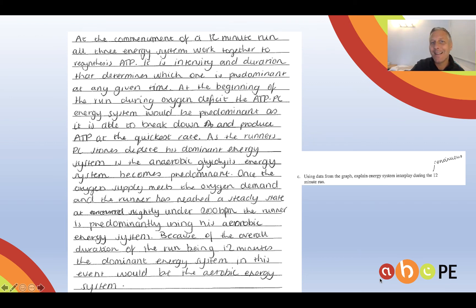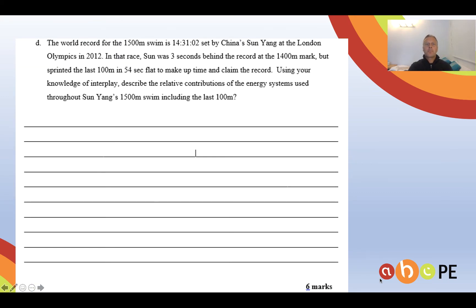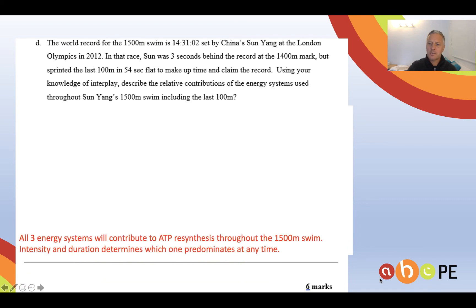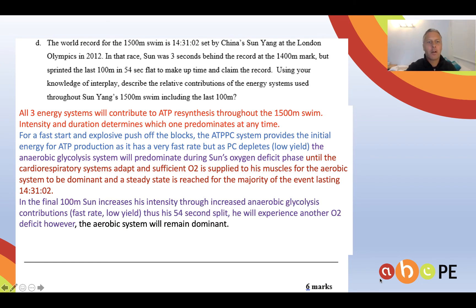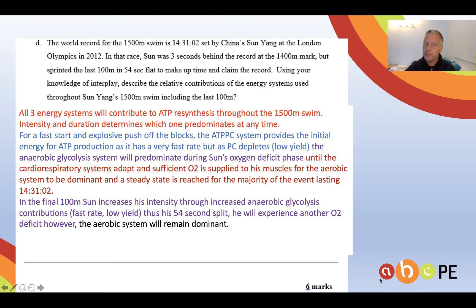I'll give you another opportunity to practise — another continuous event with a twist. This one is Sun Yang's 1500m swim, which goes for 14 minutes. There's one mark for the generic statement. Marks two, three, and four: in the final 100, he increases his intensity, so the anaerobic glycolysis system increases its contribution — that's where Sun Yang gets ATP from a faster energy system. Now, that system is not dominant. The aerobic system is dominant throughout this 14-minute continuous event, pumping out ATP constantly. But the extra ATP for the increase in intensity comes from increased anaerobic glycolysis contributions. Overall, the aerobic system is the dominant system for this event. Six marks.